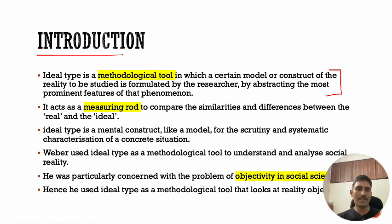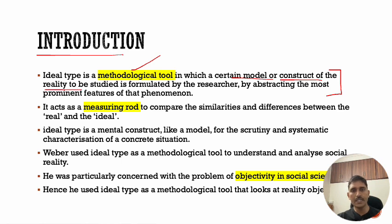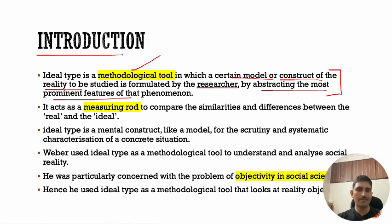According to Max Weber, an ideal type is a methodological tool in which a certain model or construct of the reality to be studied is formulated by the researcher by abstracting the most prominent features of that phenomenon. Let us understand this in very simple terms.